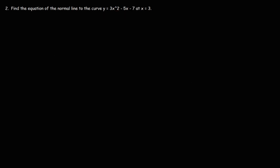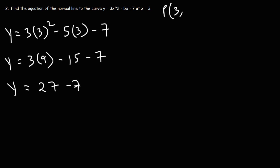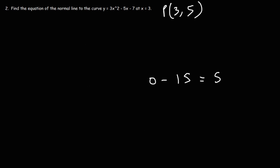Example 2: find the equation of the normal line to the curve y equals 3x squared minus 5x minus 7 at x equals 3. We begin by finding the y value when x is 3: 3 times 3 squared minus 5 times 3 minus 7. 3 squared is 9, 3 times 9 is 27, and 5 times 3 is 15. Reordering: 27 minus 7 is 20, and 20 minus 15 is 5. So the point is (3, 5) — that's where the normal line touches the curve.